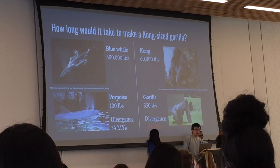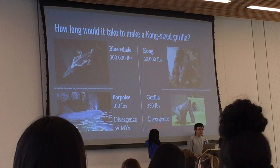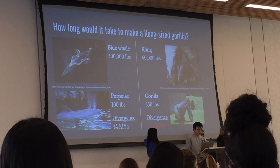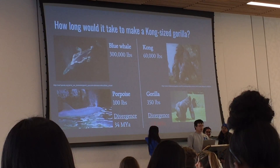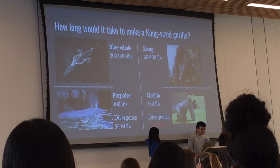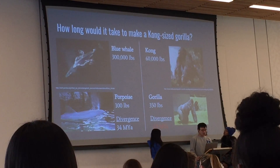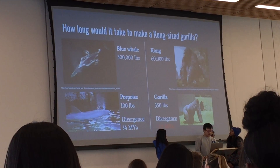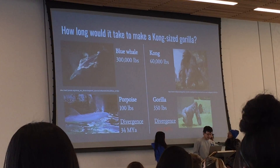We also did a comparison to figure out how long ago Kong diverged from the gorilla line. We used a proportion between the weight of a porpoise and a blue whale — from genetic data we know those two diverged 34 million years ago — and extrapolated that ratio to Kong and a gorilla. The result came out to approximately 1.9 million years ago as our estimate.